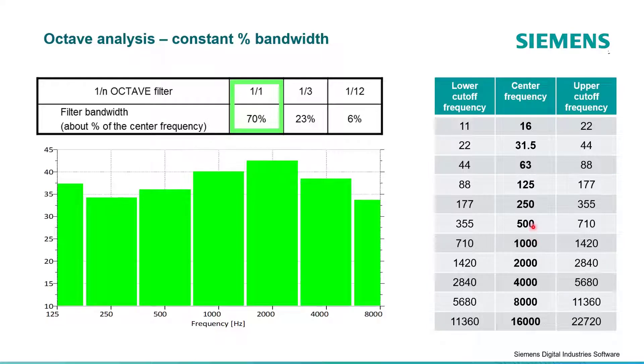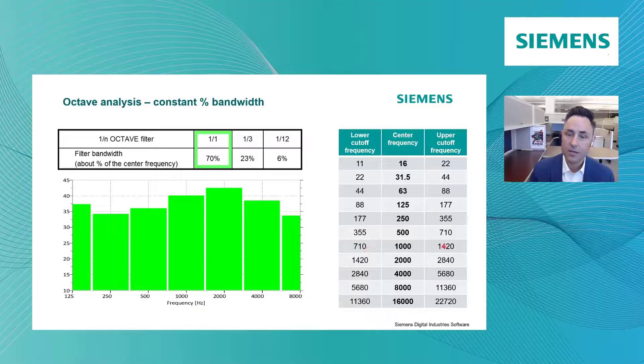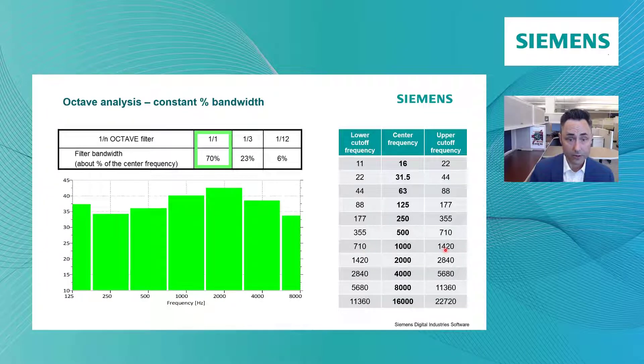They said we're going to cut the frequencies in half. If they go higher in frequency, they double. And essentially what they're saying is for this full octave band, a thousand hertz bar or the octave band at a thousand hertz will be the summation of everything from 710 hertz all the way up to 1,420 hertz.